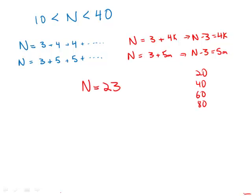So N has to equal 23. It is 3 more than a multiple of 4, 3 more than a multiple of 5, and it is also between 10 and 40. In fact, it's the only number that meets all those conditions. So the number of members is 23.